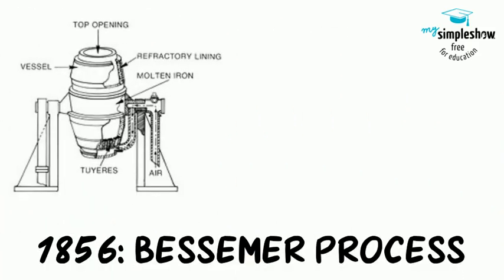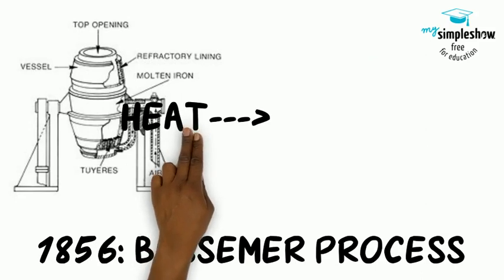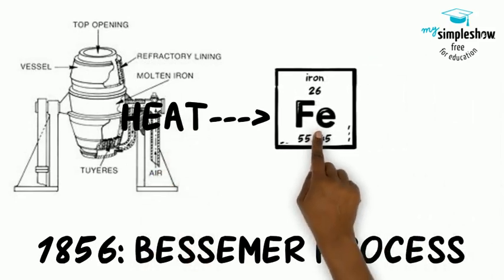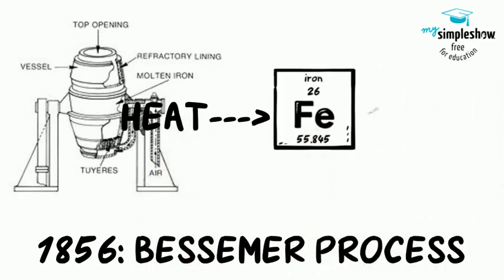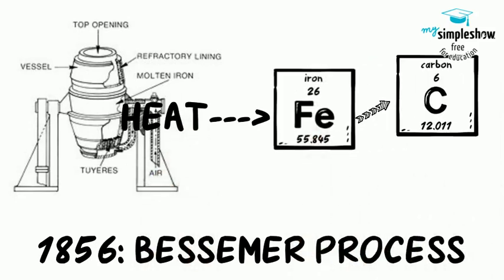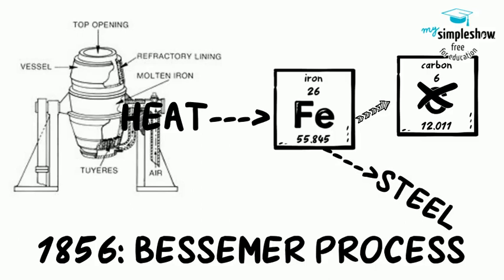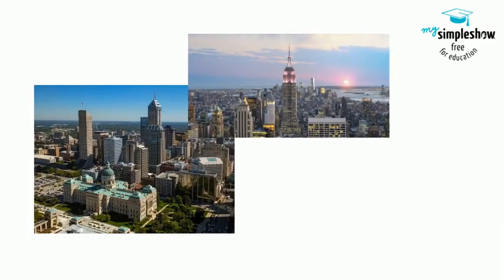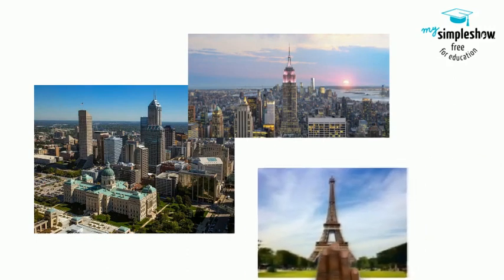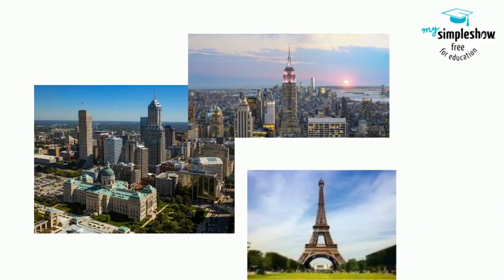In 1856, Henry Bessemer engineered the process that would use high temperatures to remove carbon from iron to produce steel. It was lighter, durable, and cheaper — and it built the modern city.